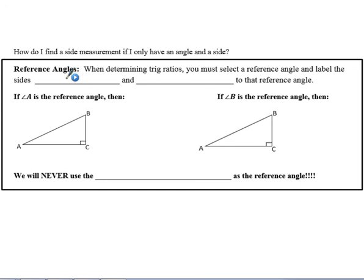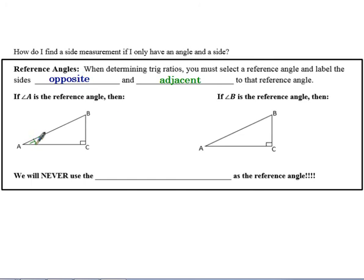The angle that we're referring to is called a reference angle. When we're trying to figure out which trig ratio to use, we need to look at our triangle and label the following sides as opposite and adjacent, in relation to our reference angle. So in an example here, we have triangle ABC. If A is our reference angle, you always want to put a little mark — sometimes just a little arch — to indicate that that's your reference angle. Side BC is the opposite side.